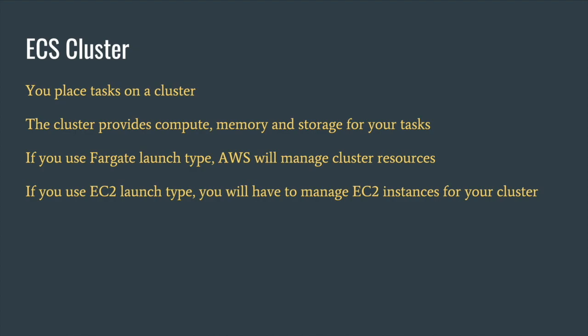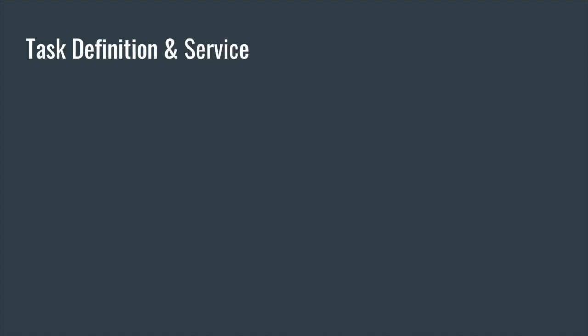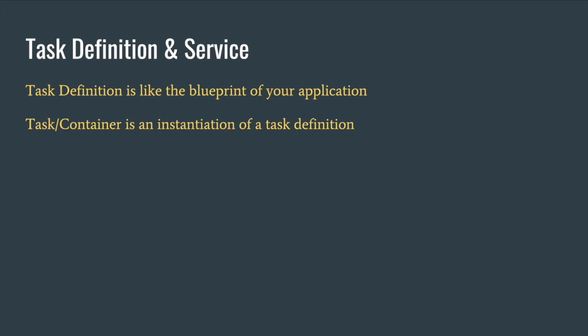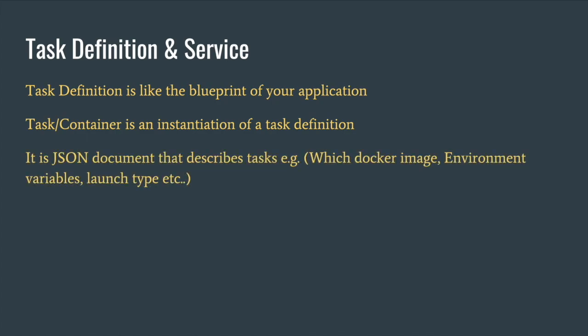Our ECS cluster has different constructs. Let's take task definitions and services first. A task definition is the blueprint of our containerized application, which is based on Docker. In order to spin up a container, we use the task definition as the blueprint. We need to create a task definition by stating what the container image is, how much memory and CPU is needed, and what environment variables to incorporate. That blueprint is called the task definition. Once you have the blueprint, you can instantiate tasks, or containers, from that task definition. The task definition is basically a JSON document.